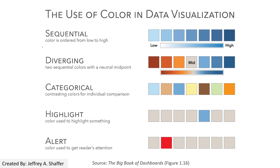I want to spend some time talking about color schemas — how we can apply color for color placement. Basically, there are three types of color schemas: sequential, diverging, and categorical.